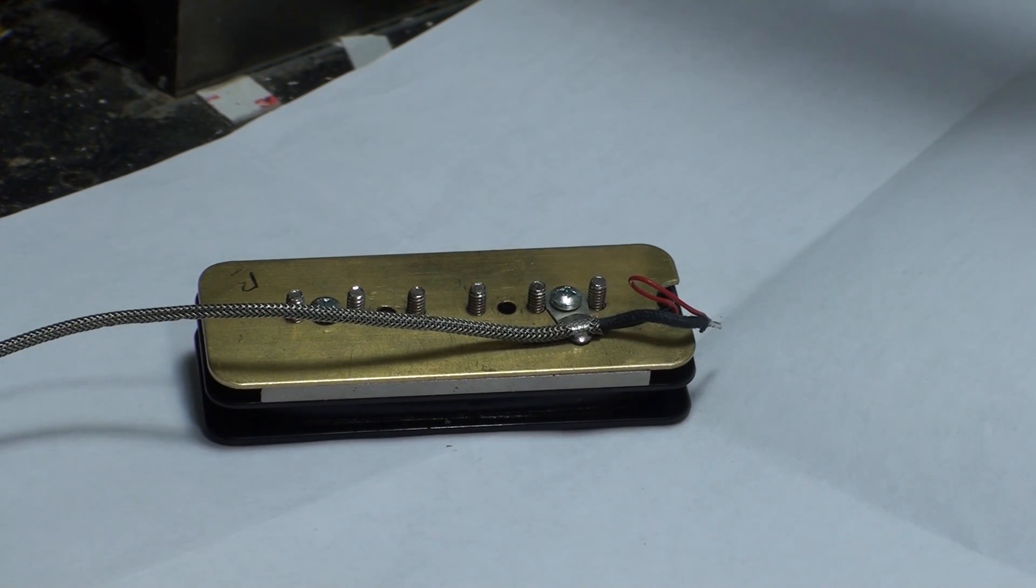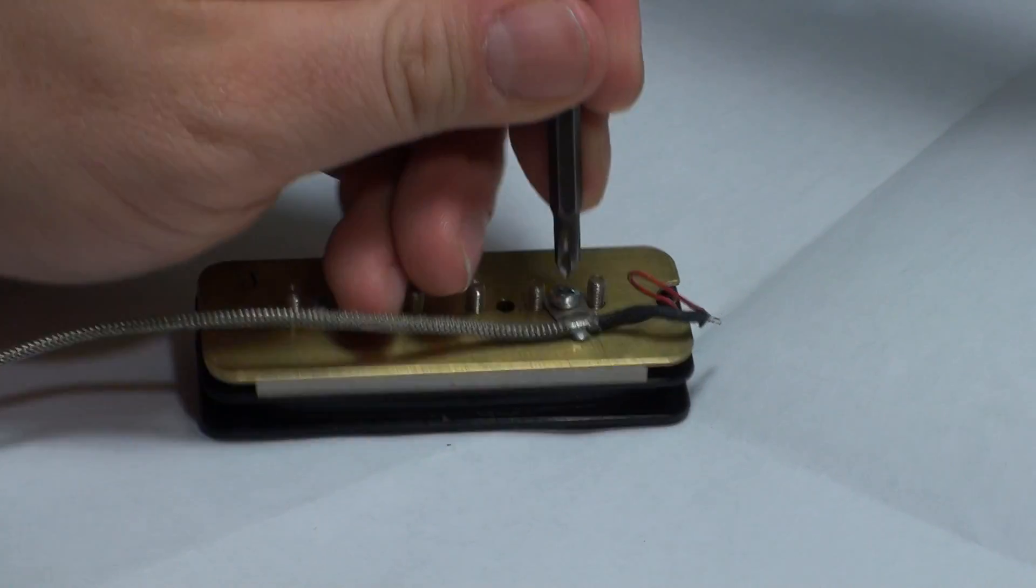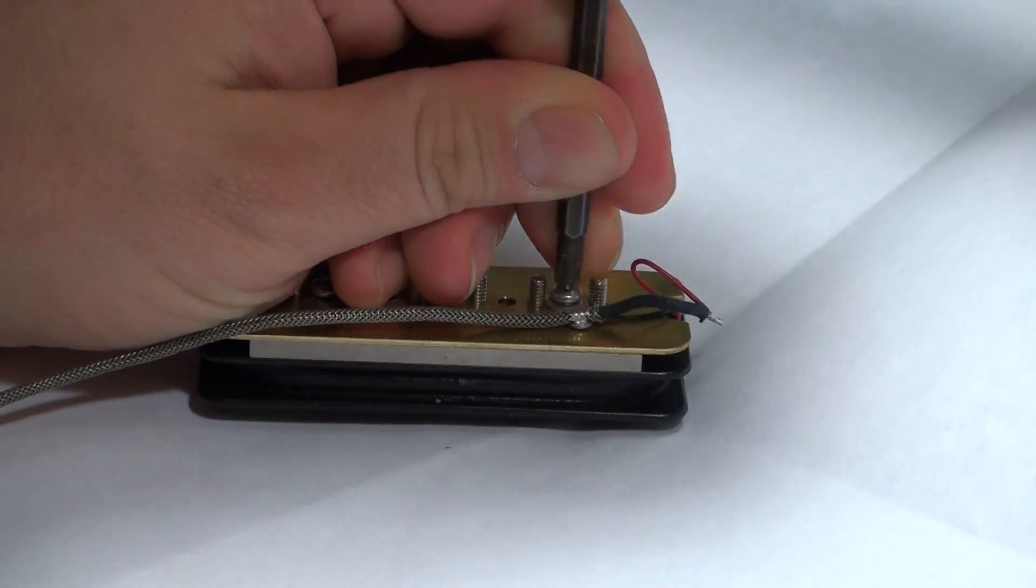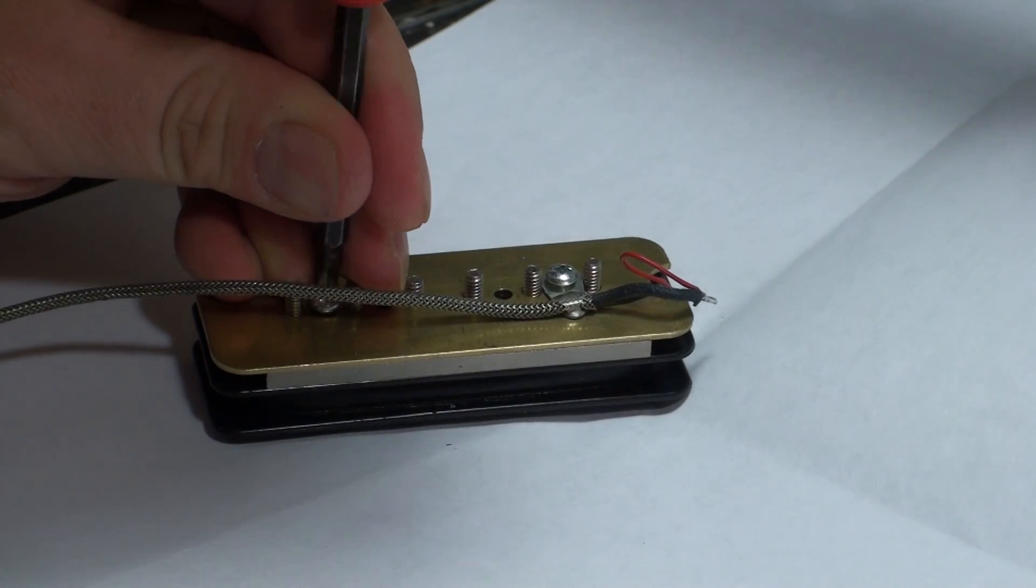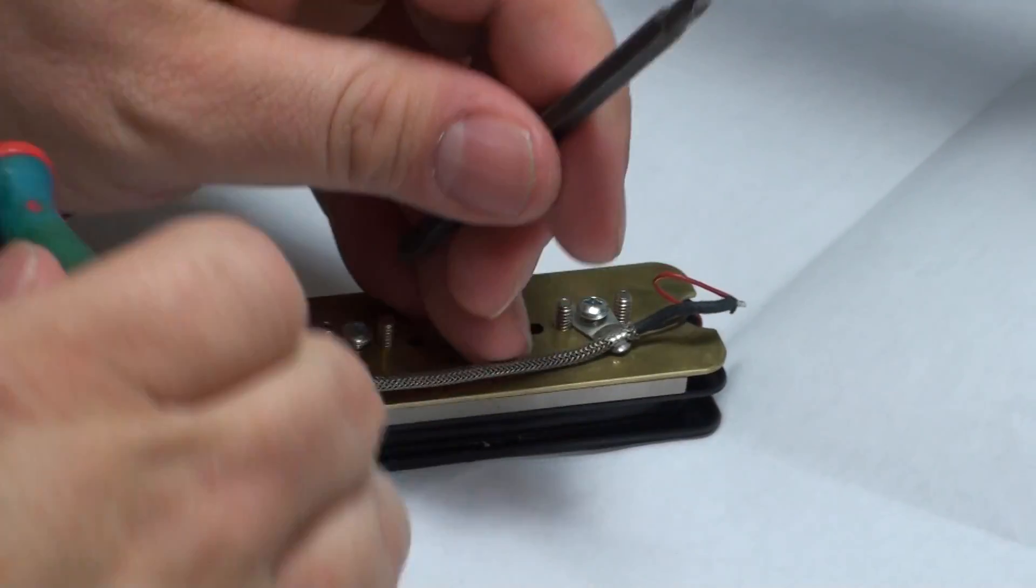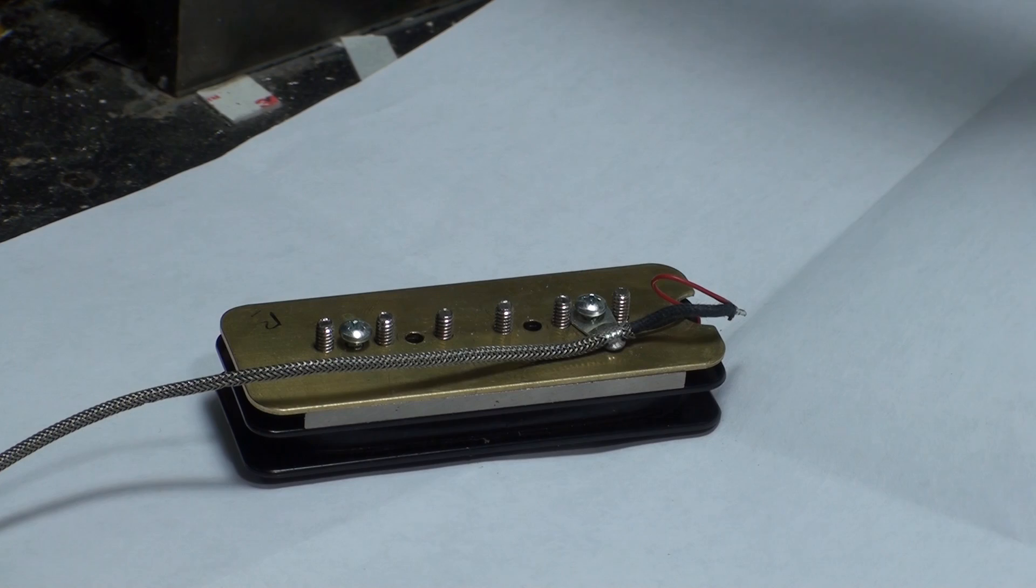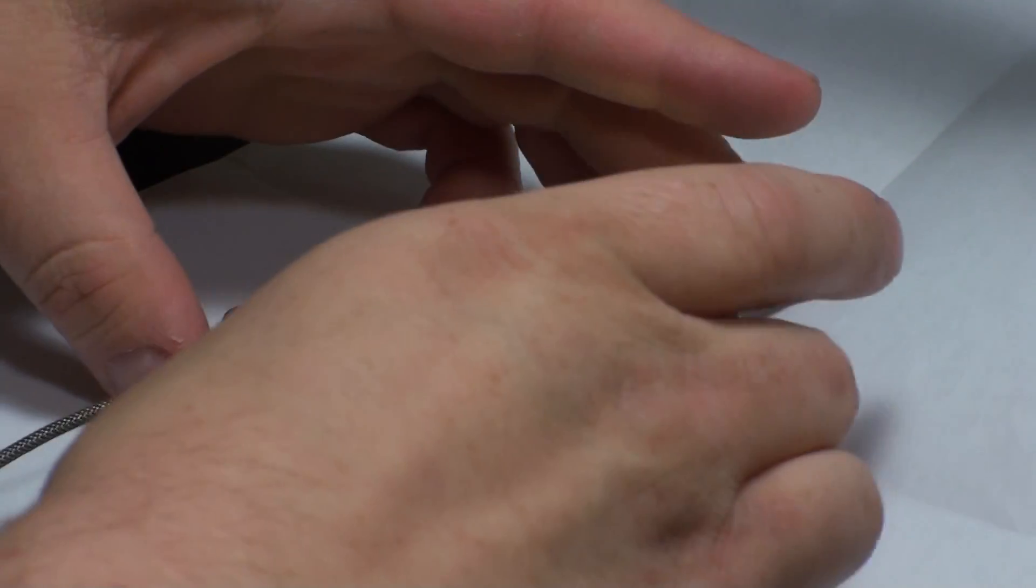Today we are going to reverse the polarity of a P90. The two screws holding the base plate on, loosen them about a turn or two apiece.